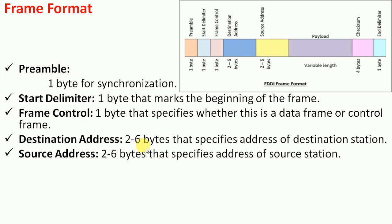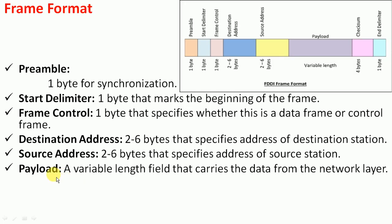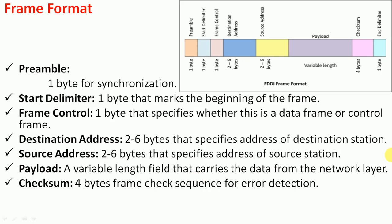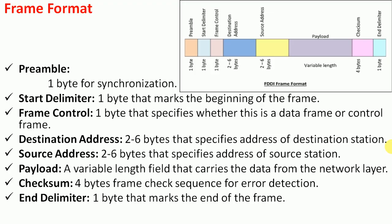The destination address field is two to six bytes specifying the address of the destination station. The source address is two to six bytes specifying the address of the source station. The payload is a variable-length field that carries the actual data. The checksum is four bytes used as a frame check sequence for error detection.